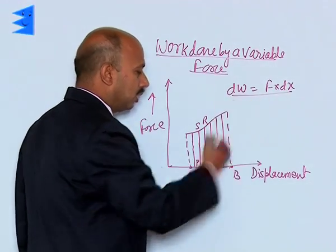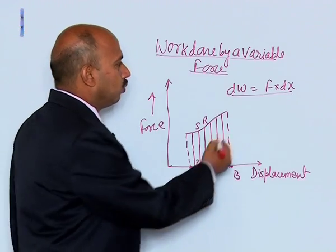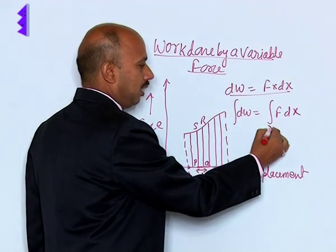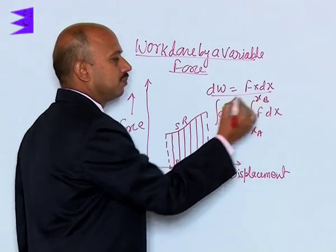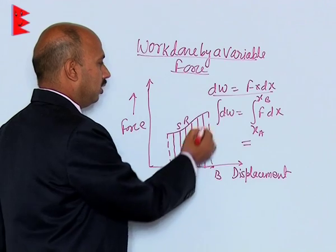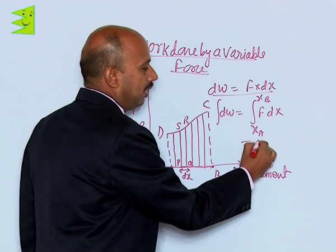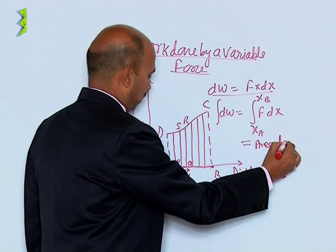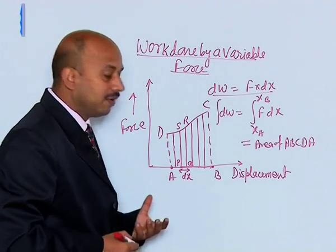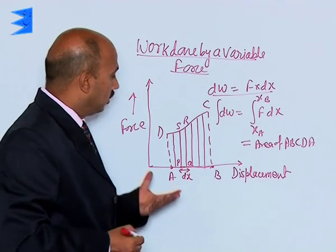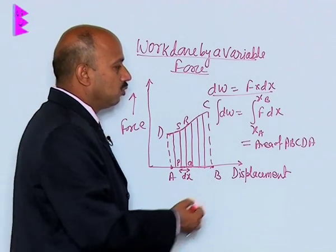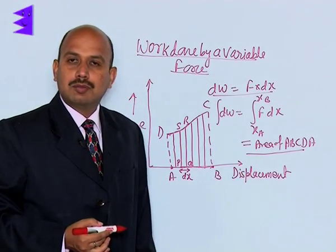Now we have to calculate the total work done from A to B, so we can integrate it. When we integrate dW = F·dx from xA to xB, the result — suppose this region is C and D — will be equal to the area of ABCDA. So the work done by a variable force is numerically equal to the area under the force-displacement graph. This area represents the work done by the variable force.